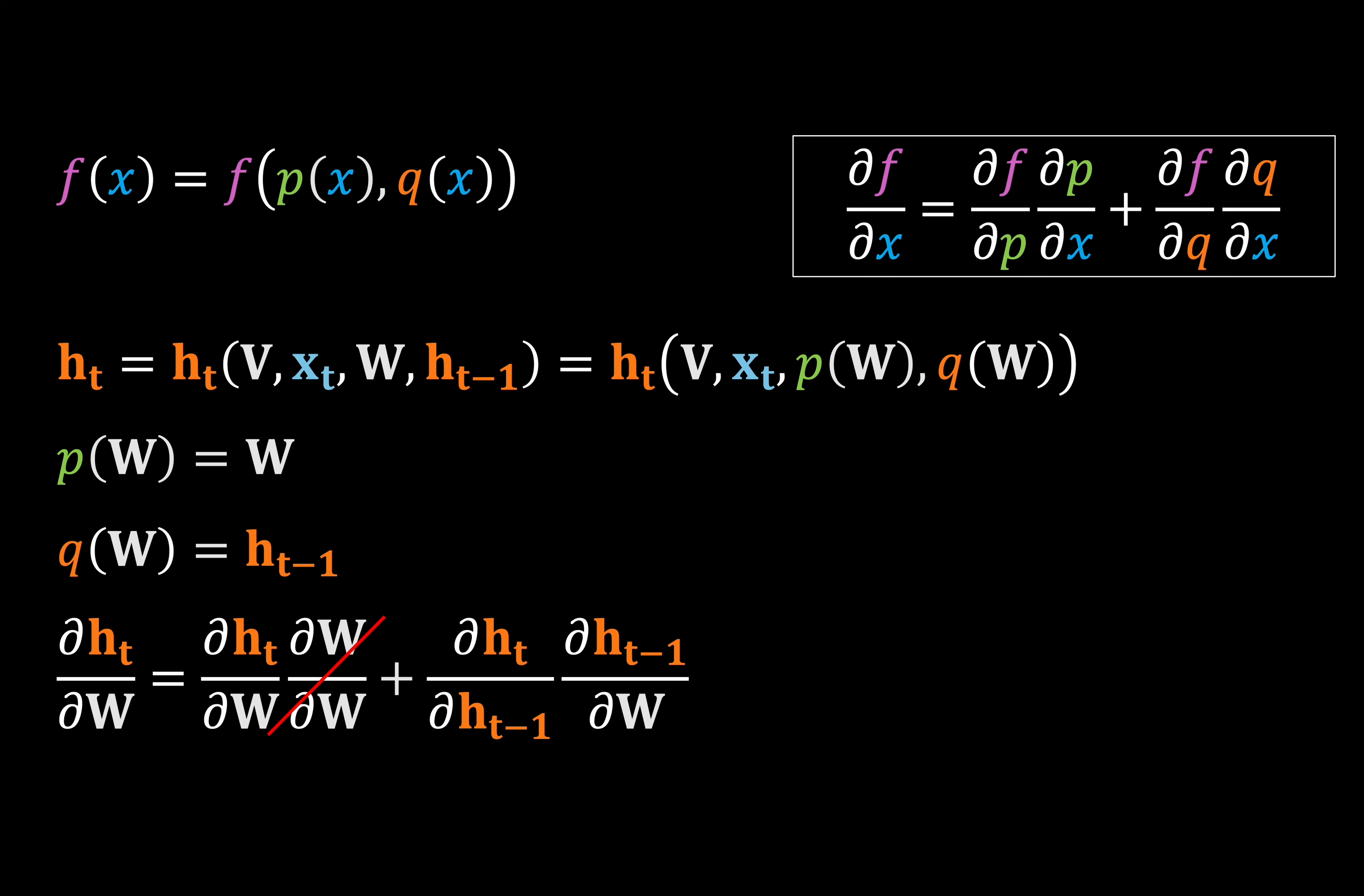Now this equation looks a little weird, because we have dH_T over dW on the left-hand side, and also dH_T by dW plus something else on the right-hand side. But this right-hand version is actually what we call the immediate partial derivative, which is to say the partial derivative given that H of T minus 1 is held constant. And we'll make this distinction by coloring it yellow. But now we've still got to contend with this term at the end here. So let's see how we can write it out.